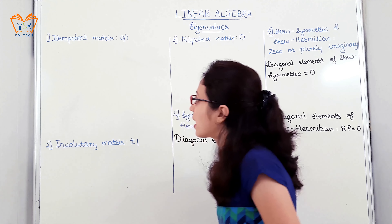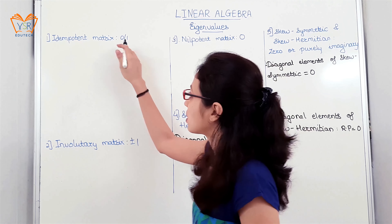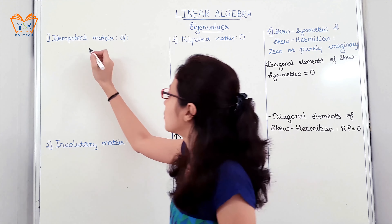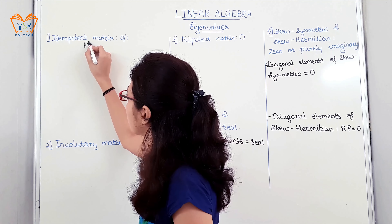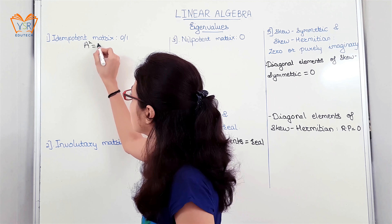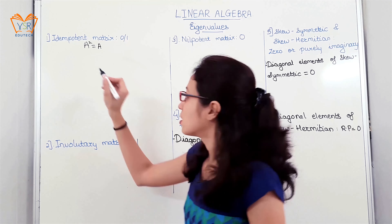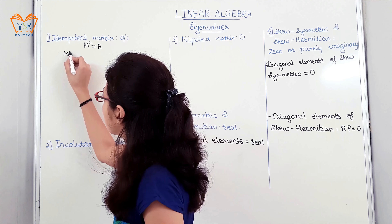The first: idempotent matrix eigenvalues are either 0 or 1. We know the definition of idempotent matrix — it is A squared equals A. We will take this equation for the proof.